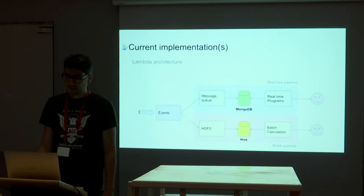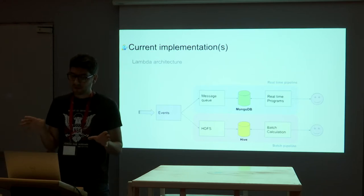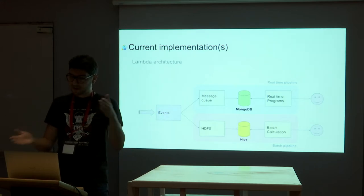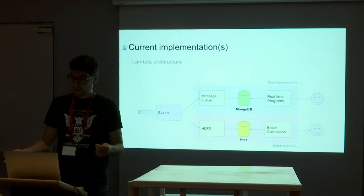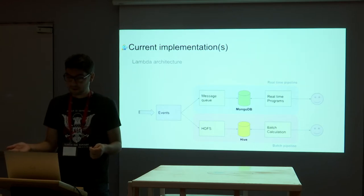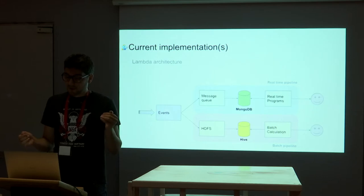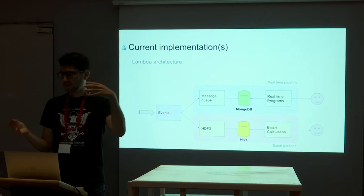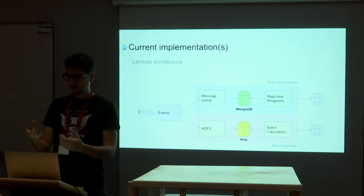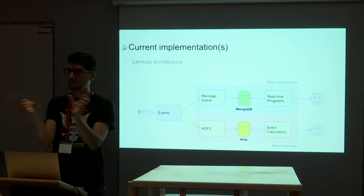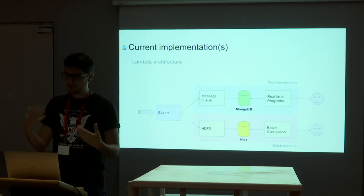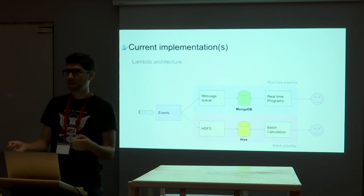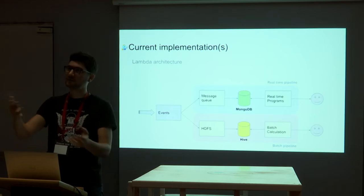Today we have a typical Lambda architecture. We have events coming in and they are split into two pipelines: a real-time pipeline and a batch pipeline. On the real-time one, we use MongoDB as a storage engine. We have a message queue, workers take the things and store those matching IDs in MongoDB, and then real-time programs interact with these events and say: 'I see this and I know the matching is that, so I can do that.'